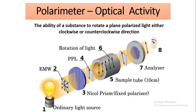An instrument used to measure optical activity is the polarimeter. The ability of a substance to rotate plane polarized light either clockwise or anti-clockwise is called optical activity. Ordinary light consists of electromagnetic radiations oscillating in all planes. While passing through a Nicol prism, it is converted into single-plane light, oscillating in only one direction. When this plane polarized light passes through the sample, it is either rotated clockwise or anti-clockwise depending on the sample inside the tube. The analyzer is rotated to adjust the light, and we can measure the angle of rotation.